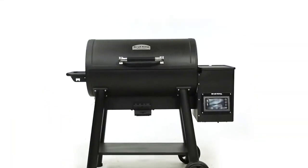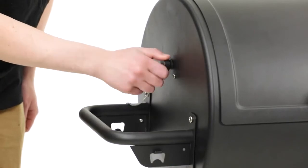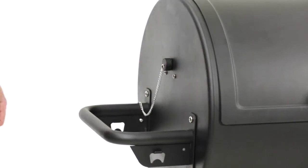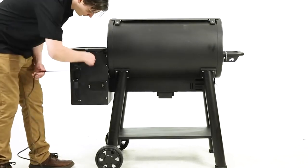You are now done assembling your Broil King pellet grill. Before storing your grill, screw the chain cap onto the threaded opening on the left side of the cook box. Use the bracket on the back of the pellet hopper to safely store the cord when not in use.